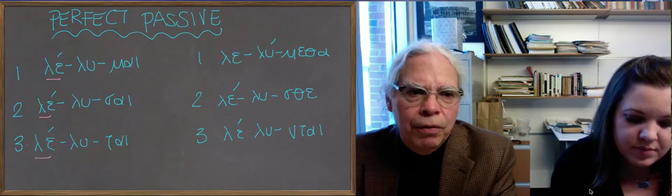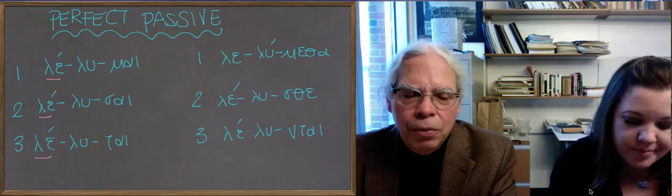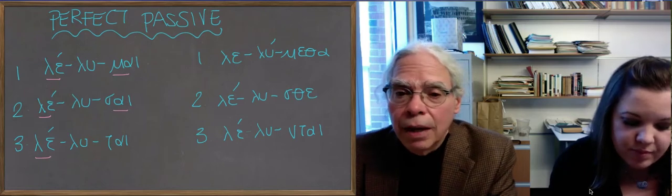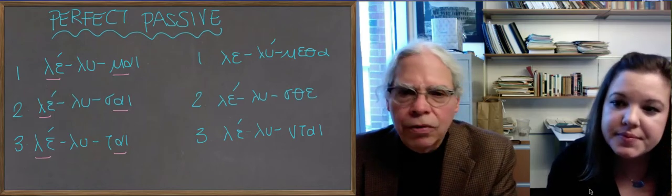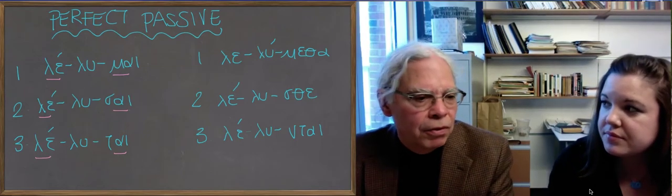And then you have the passive endings tacked on right after the stem lu. What's missing is the thematic vowel. And so this is a global thing about the perfect passive, both the perfect and the pluperfect passive. They are athematic verb forms.